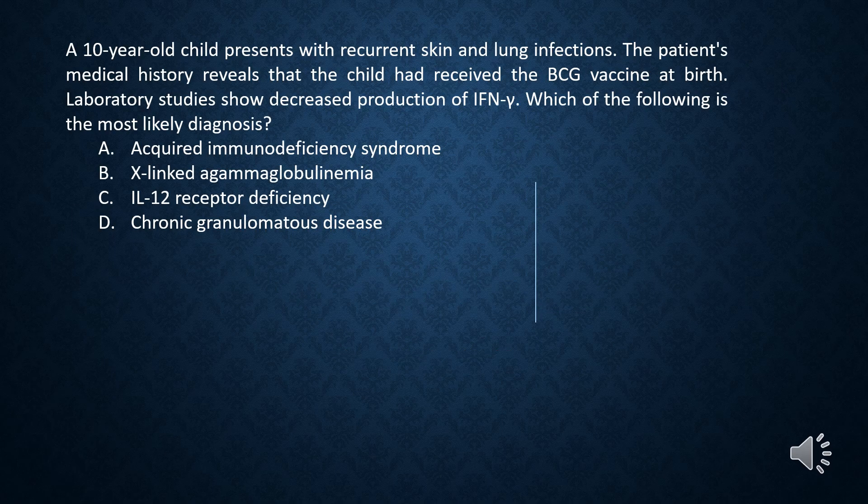A 10-year-old child presents with recurrent skin and lung infections. The patient's medical history reveals that the child had received the BCG vaccine at birth. Laboratory studies show decreased production of interferon gamma. Which of the following is the most likely diagnosis? A. Acquired immunodeficiency syndrome. B. X-linked agammaglobulinemia. C. IL-12 receptor deficiency. D. Chronic granulomatous disease.